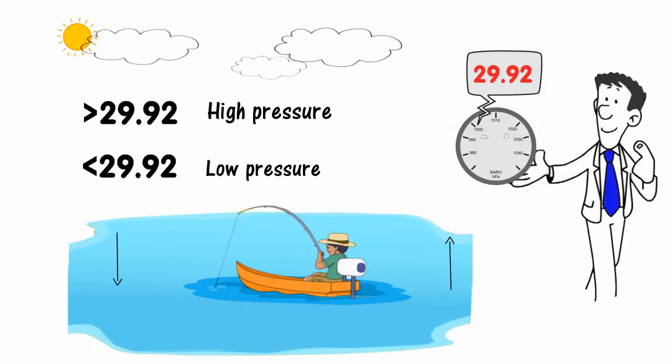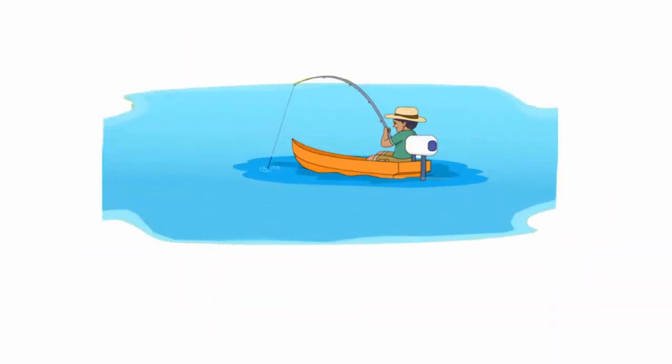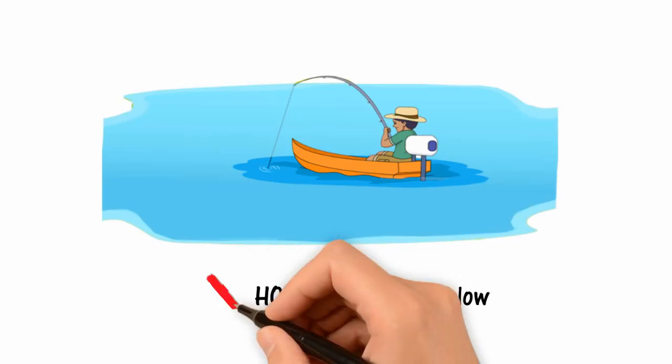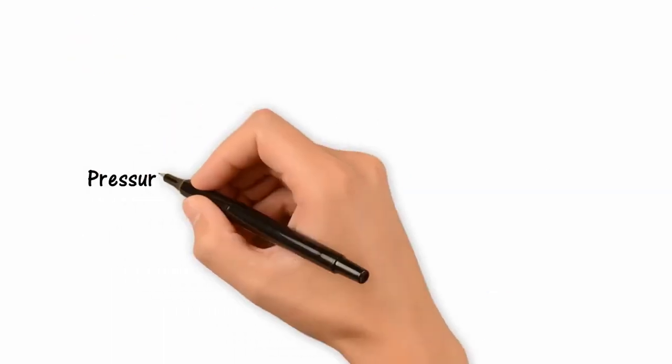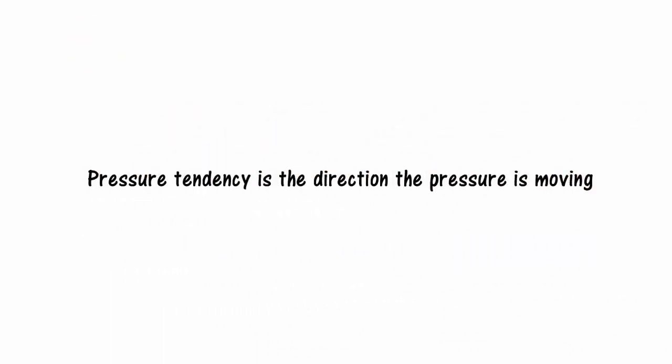When examining pressure for fishing, how high and how low isn't as important as which direction the pressure is moving and how fast it is moving. Pressure tendency is the direction the pressure is moving.